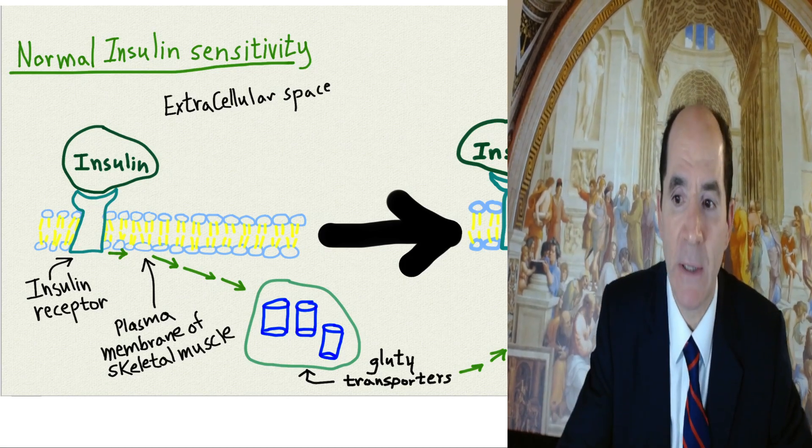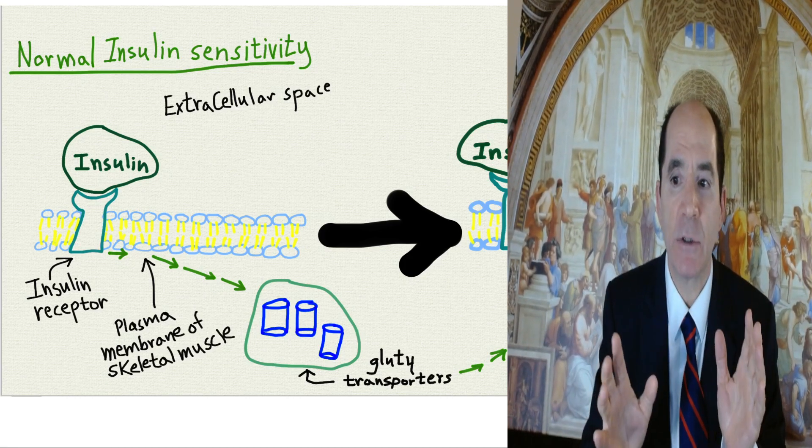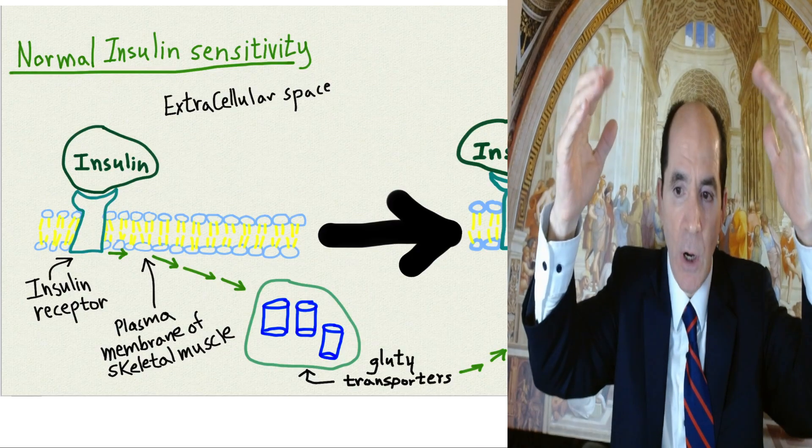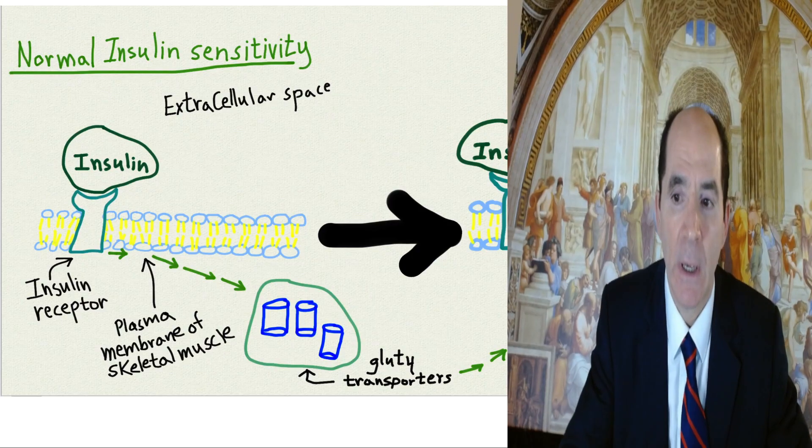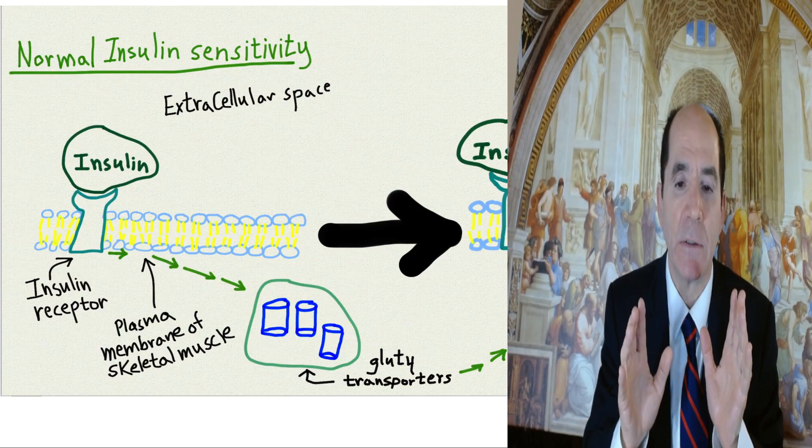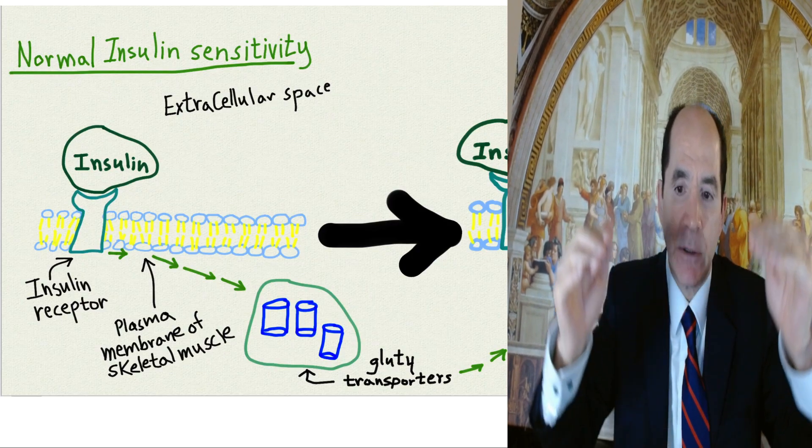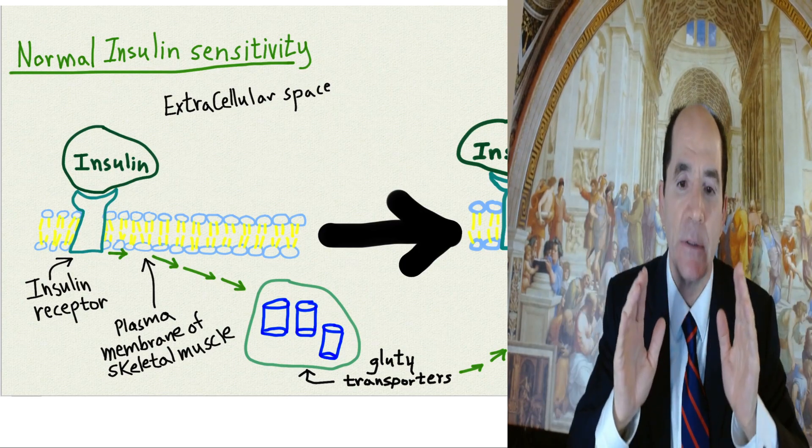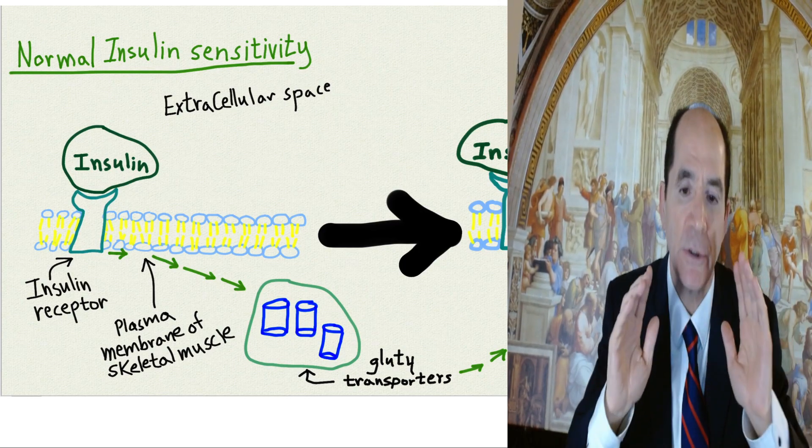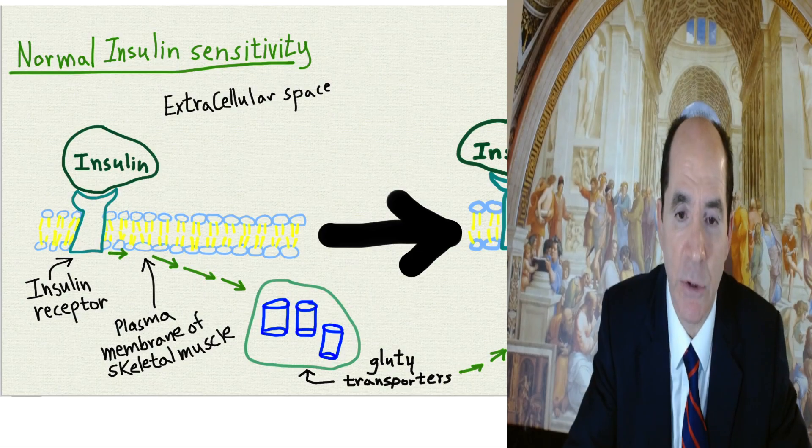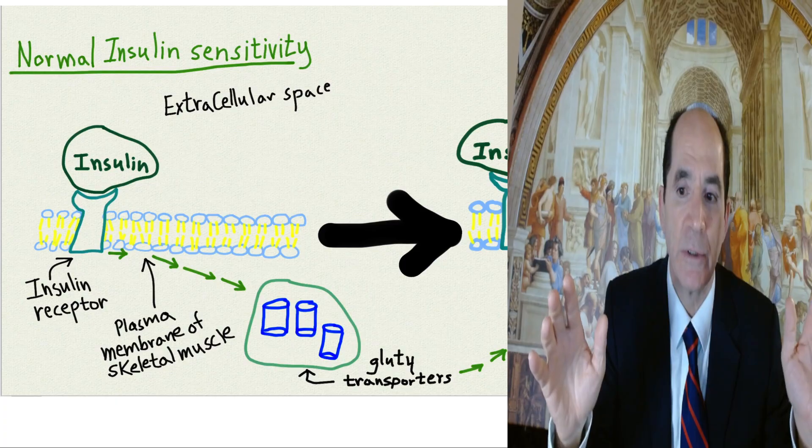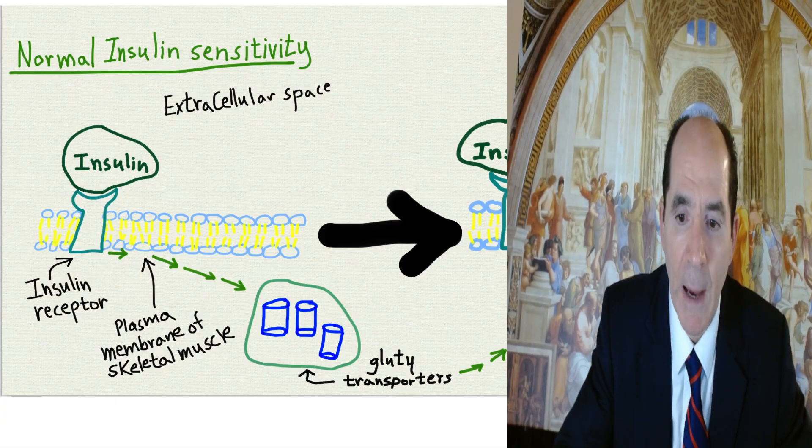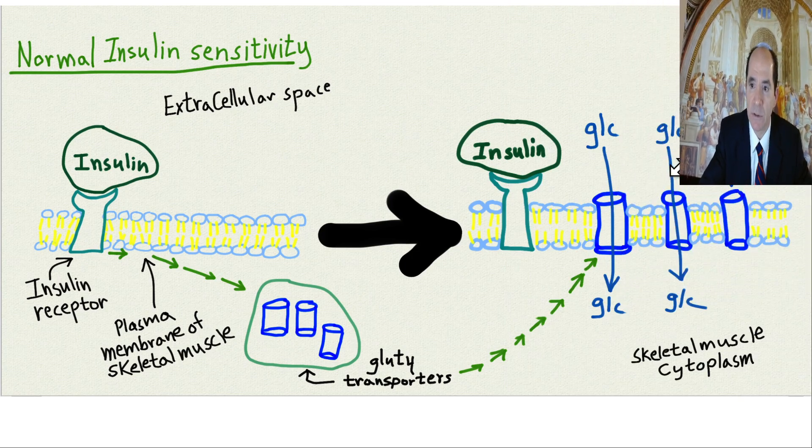This video is called Why Starch Prevents Cancer. We're going to talk about insulin resistance here, and you could also call this Why Elevated Insulin Levels Increase Cancer Risk. Part of the point of this talk is high-fat diets are connected to increased risk of diabetes, hypertension, and cancer. I've gone through other talks about how high-fat diets increase cancer risk in multiple ways, but I'm going to go through the issue of how they do it by increasing insulin resistance in this talk.